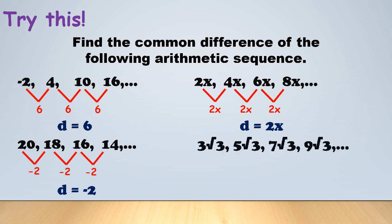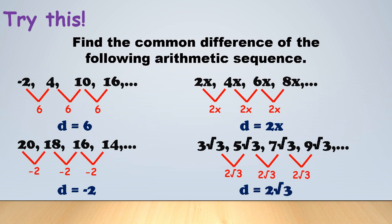Last example: 3√3, 5√3, 7√3, 9√3. The process is the same — subtract any consecutive terms. Each subtraction gives 2√3, so the common difference is 2√3. After finding the common difference, you can use it to find the next term in your arithmetic sequence.